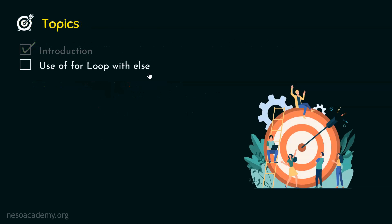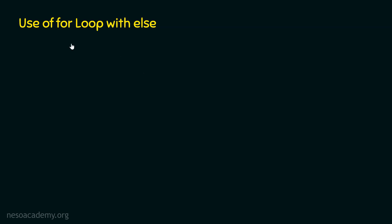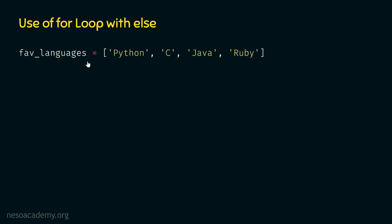Now let's understand the use of for loop with else block. We can understand this with the help of an example. Let's say we have a list of favorite languages — the languages we like the most. This list of favorite languages consists of four languages: Python, C, Java, and Ruby.